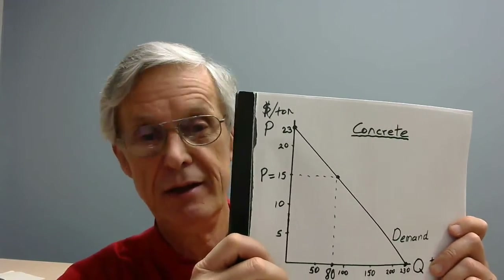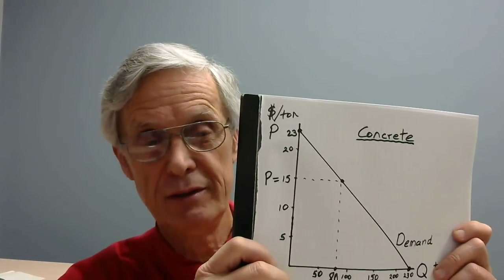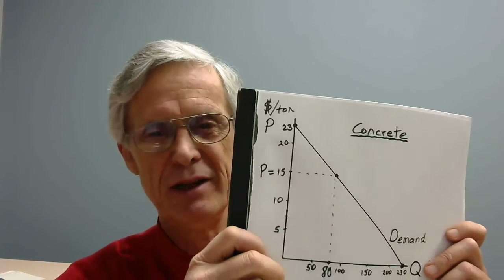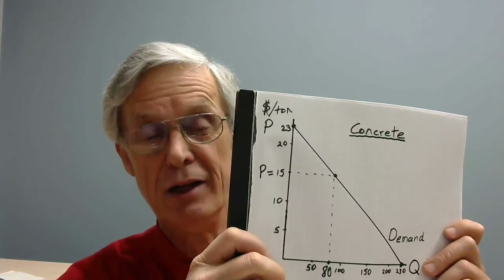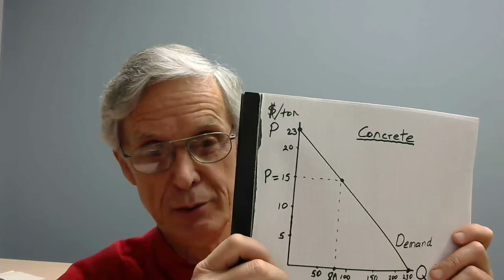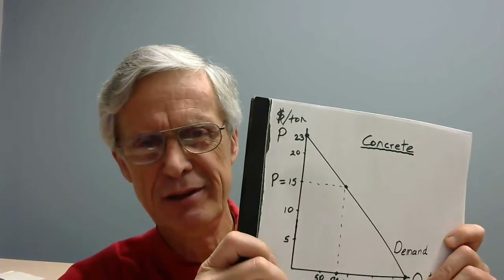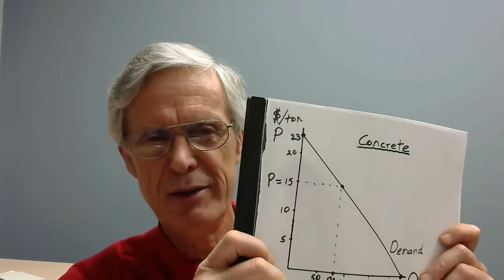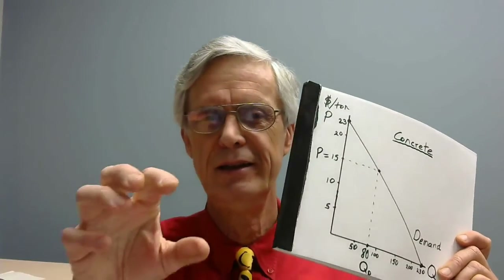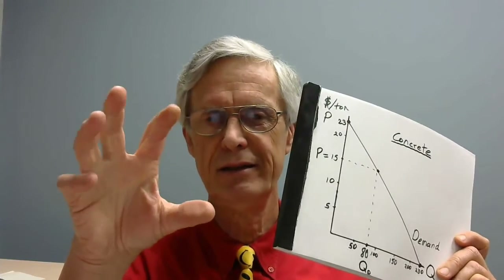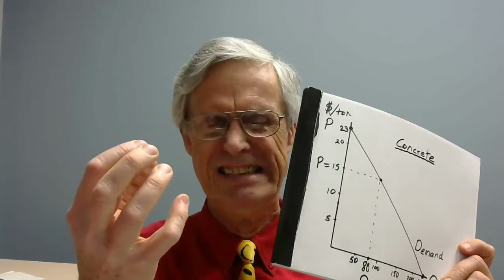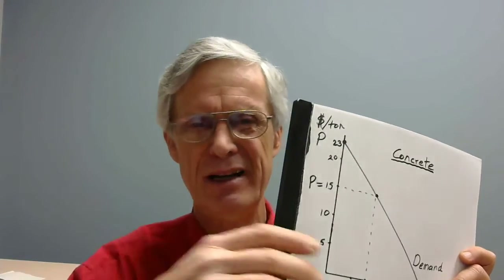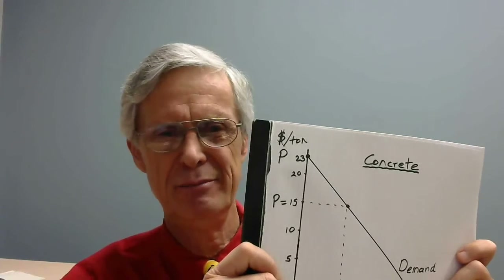This is a market demand line. You can have a demand line for an individual person, but here we're talking about the whole market. This demand line is an aggregation of the demand for concrete by all the people in the geographic area represented by this particular market. The person able to buy it for $15 who would have paid $22.99 enjoys a $7.99 gain from trade for that one ton of concrete.